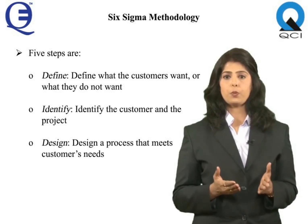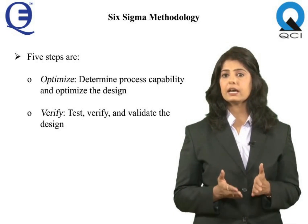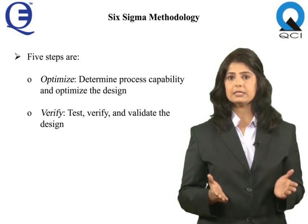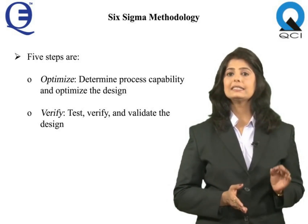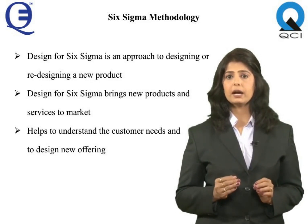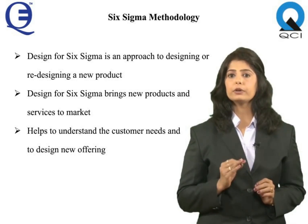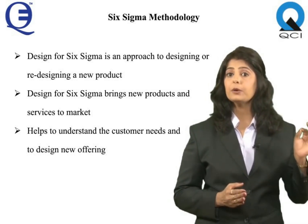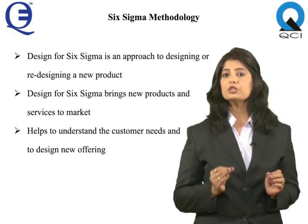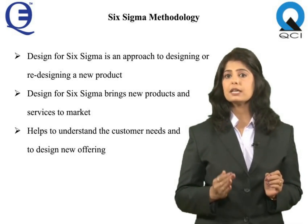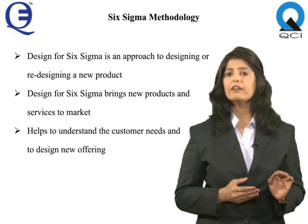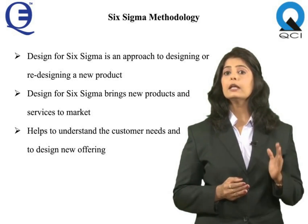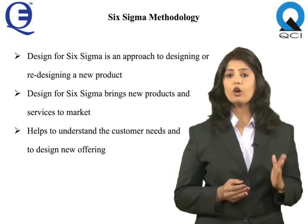The five DFSS steps in detail: Define — what the customers want or do not want. Identify — the customer and the project. Design — a process that meets customers' needs. Optimize — determine process capability and optimize the design. Verify — test, verify, and validate the design. Design for Six Sigma is an approach to designing or redesigning a new product and/or service for a commercial market with a measurably high process Sigma from day one, bringing new offerings to market with a process performance of around 4.5 Sigma or more for every customer requirement.